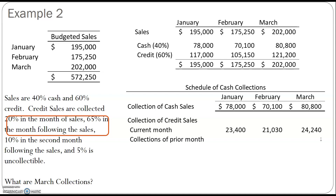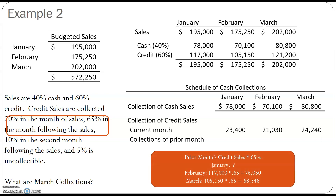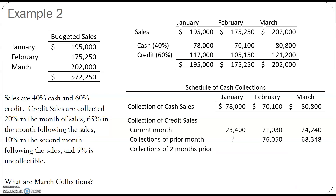Next, our data tells us that credit sales are collected 65% in the month following the sale. That means December credit sales — 65% of those are collected in January, and January credit sales — 65% are collected in February, so everything shifts over one month. We don't know what December sales were, but that's fine since we're primarily calculating March collections. We know that in February they'll collect 65% of January's credit sales, and in March they'll collect 65% of February's credit sales, so we add those into our table.